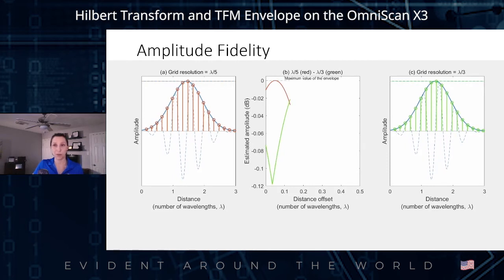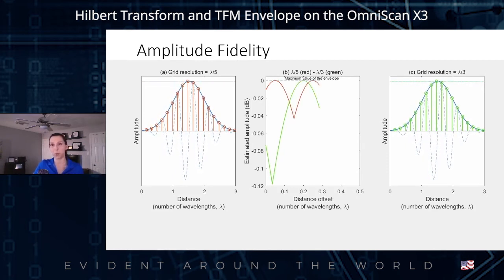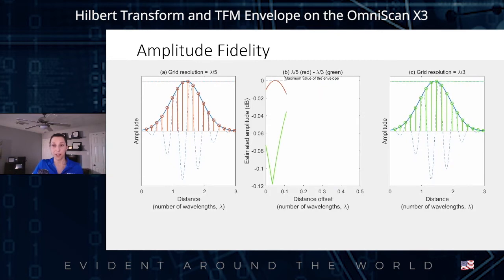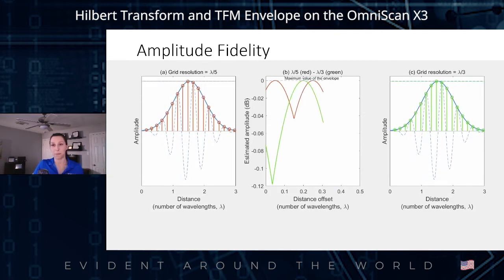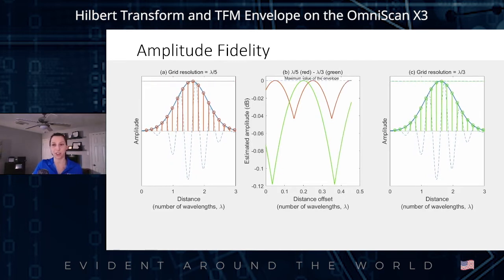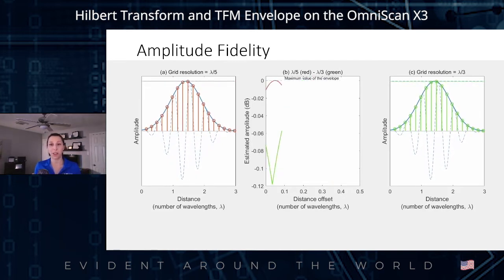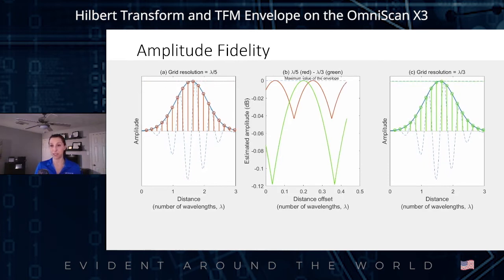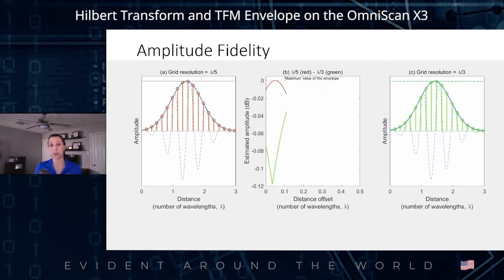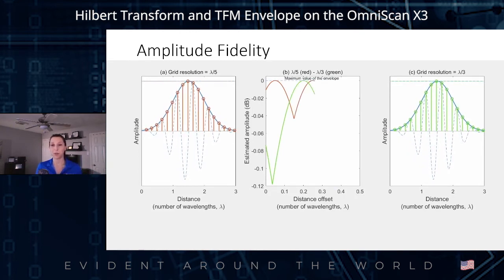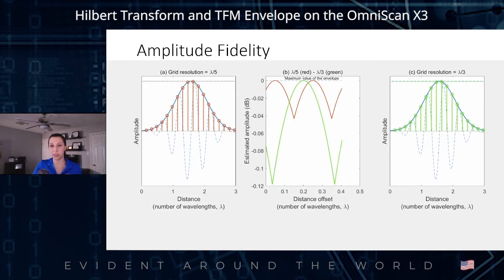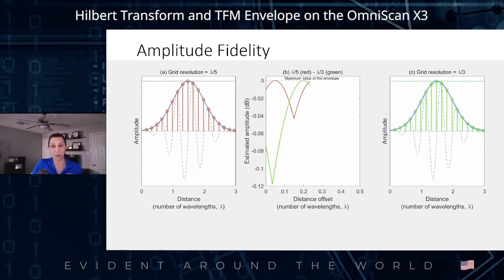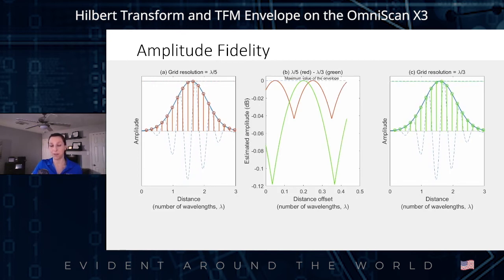Now using the same sampling rates but with a TFM envelope — with vertical lines representing a vertical grid — we are actually meeting our true maximum in both cases when the signal moves across the grid. Notice the amplitude variation: for five samples per wavelength we have as little as 0.04 dB variation, and for three samples per wavelength as small as 0.12 dB variation. This makes the amplitude fidelity requirement of 2 dB much easier to comply with using a smaller sample size, meaning a much faster inspection speed is possible while still maintaining very safe amplitude fidelity.